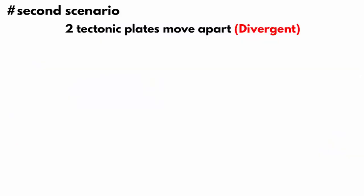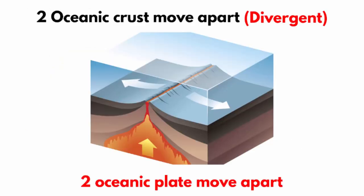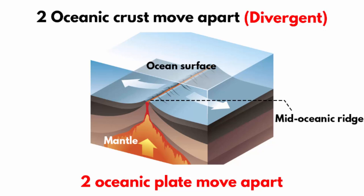Now, coming to the second scenario: when two tectonic plates move apart from each other, it is called a divergent boundary. It can occur between two oceanic plates and two continental plates. When there is a divergent plate boundary in the ocean — in other words, when two oceanic plates are moving away from each other — molten basaltic magma from the mantle comes up and spreads on the ocean surface. This is also called a mid-oceanic ridge.